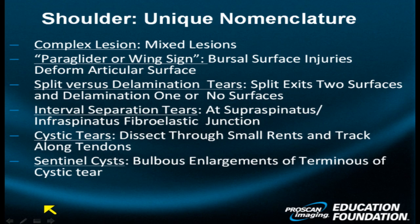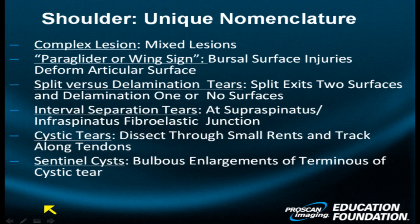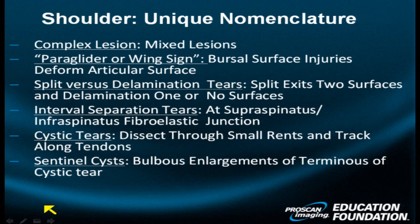Split versus delamination tears — already discussed in one of our earlier vignettes. A split tear exits two sides of the rotator cuff: medial and lateral, or superior and inferior. Whereas a delamination tear is either completely intrasubstance or only exits one side — either superior or inferior, either medial or lateral.